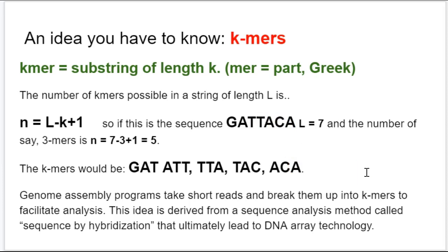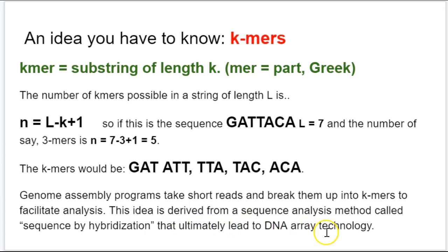K-mers turn out to be incredibly useful in genome assembly and also for other purposes. Computationally, people continue to be really interested in how K-mers can be made more useful. We use the K-mer idea because even the short reads from Illumina sequencing turn out to be long enough to be complex and difficult to use in genome assembly. So, counterintuitively, we take short reads and actually break them up into K-mers to help with genome assembly.